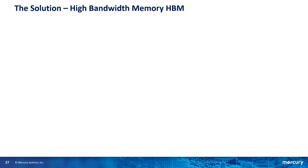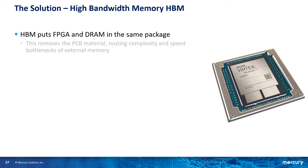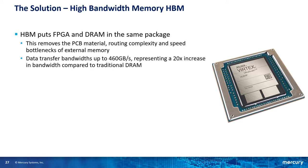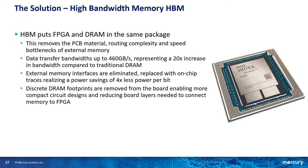This technology is starting to be used with different types of processors, but I'll focus on FPGAs. HBM stacks multiple memory dies on top of each other and puts that stack in the same IC package as the FPGA. The two smaller rectangles in the photo below the main Virtex die are the HBMs. This removes the PCB material, the routing complexity, and the speed bottlenecks of having external memory. It enables an amazing transfer bandwidth of up to 460 GB per second — about a 20 times increase over traditional DRAM. External memory interfaces are eliminated and replaced with on-chip routing, realizing a power savings of about four times less power per bit. And the discrete DRAM IC footprints are removed from the board, enabling a more compact circuit design and reducing board layer count. While the FPGA package does grow a little because you're adding those HBM dies, it's far less than the real estate that eight external DRAM chips would occupy.